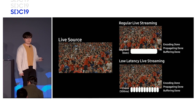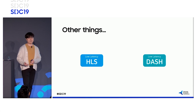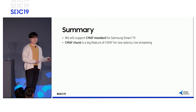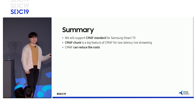Furthermore, DASH and low-latency HLS are preferred features for supporting low-latency. To summarize, we will support CMAF, and the CMAF chunk is a big feature for low-latency live streaming. Lastly, CMAF can also reduce cost.